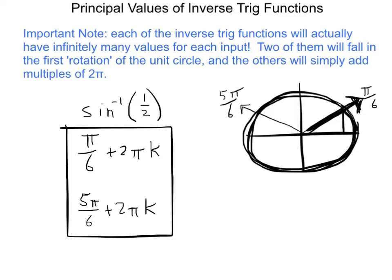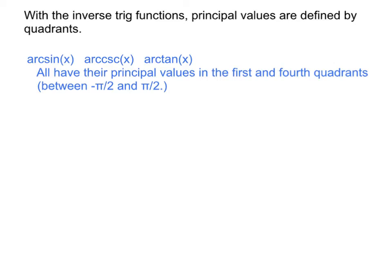What we need to talk about is: among those infinitely many choices, how do we pick the principal value? With the inverse trig functions, the principal values are defined by quadrants. Of the six inverse trig functions, three follow one pattern and three follow the other. Arc sine, arc cosecant, and arc tangent all have their principal values in the first and fourth quadrants — meaning all answers are between -π/2 and +π/2. I remember these as the sine-based functions: sine itself, cosecant which is 1/over sine, and tangent which is sine over cosine.